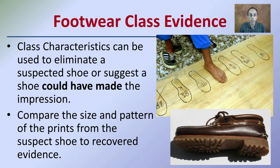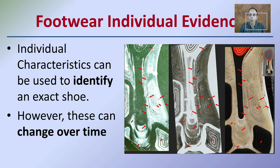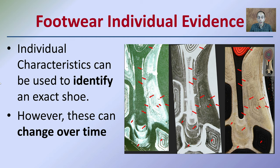When we're talking about individual characteristics for shoes, those are generally class characteristics, but individual characteristics are used to identify the exact shoe. Keep in mind that these can change over time, so if you're able to capture the shoe very closely to when the crime occurred, that gives you the strongest matching possibility. Individual characteristics can include small cracks, tears, or small imperfections found in the tread.